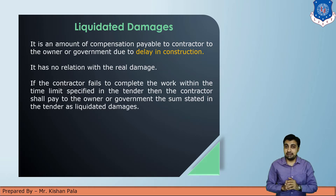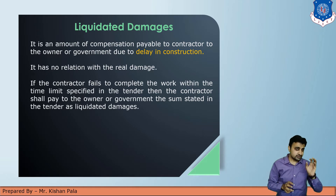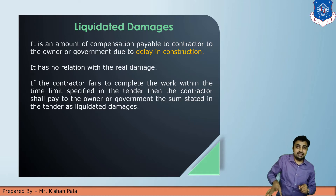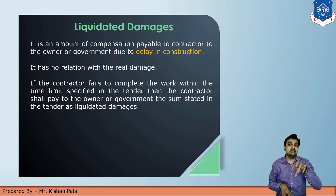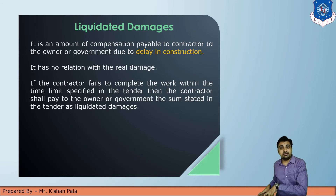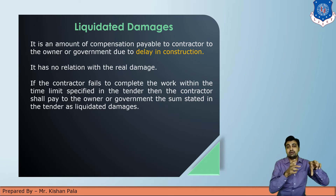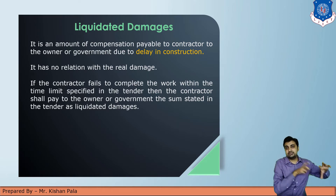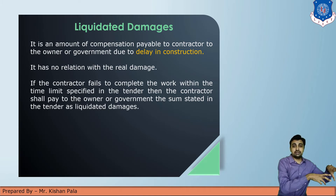Now let us discuss about liquidated damage. It is the amount of compensation payable by the contractor to the owner or government due to delay in construction work. If a contractor delays a project, there may be damage to the owner — who may be private or government. If it is a government body such as a road and building department or irrigation department, the contractor is liable to pay compensation to that body. Similarly, if the client is from the private sector, the contractor must pay compensation to that owner.